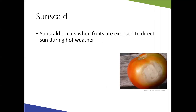Sun scald is essentially a sunburn on the fruit. It occurs when fruit are exposed to direct sun during hot weather. This can happen if you prune too aggressively and expose shaded fruit to full sun, or if foliar disease causes leaf drop and suddenly exposes fruit. Taking steps to reduce leaf spot and maintain a healthy canopy helps prevent sun scald and keeps fruit properly shaded.